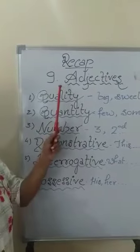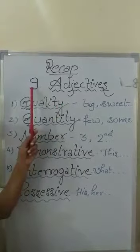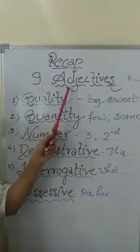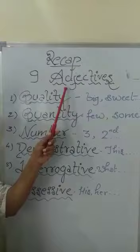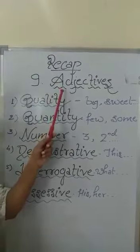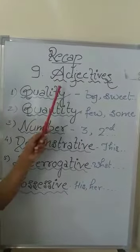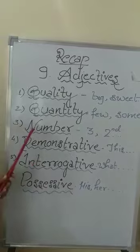In the previous class, we have learnt about adjectives. That is chapter 9. Adjectives are the words that describe and give additional information about a noun and a pronoun. There are total six types of adjectives.